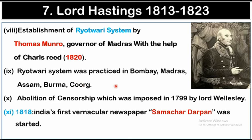An important event under Lord Hastings's rule was the abolition of censorship, which had been imposed in 1799 by Lord Wellesley to stop the French from publishing anything that could hurt the British Empire in India. In 1818, India's first vernacular newspaper, Samachar Darpan, was started after the abolition of censorship.